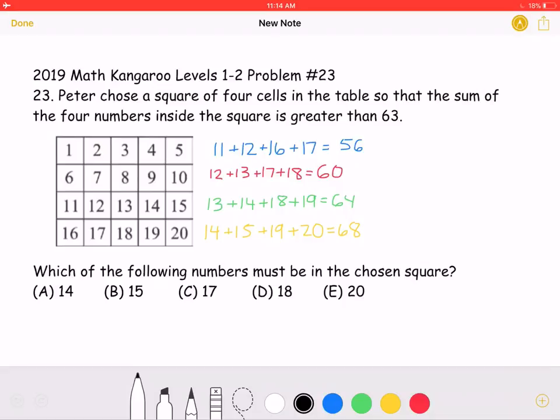So, let's start by taking a look at this number 63. We know that we want to choose a square of four cells whose sum is greater than 63. Well, we know that 16 times 4 is equal to 64, so we need to realize that each of the four numbers in the square must be pretty large, around 16.